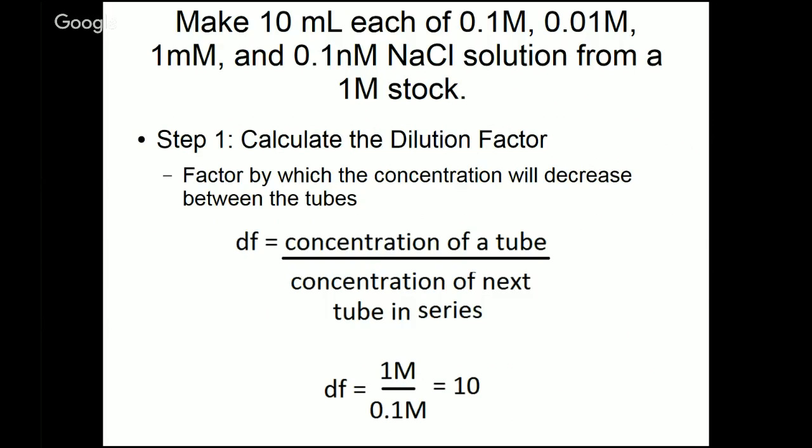Well, first of all, let's look at the formula that you're going to use for this dilution. The first number you need to calculate is what we call the dilution factor. The dilution factor, as it says here, is the factor by which the concentration will decrease between the tubes. So they're going to decrease by a constant factor. Calculating the dilution factor is actually really easy. What you do is you take the concentration of one particular tube, and you're going to divide it by the concentration of the next most concentrated tube in the series. So in this case, we've got our 1 molar stock. We're going to divide that by the next tube in the series, which is the 0.1 molar. So 1 divided by 0.1, that tells us that our dilution factor for the series is 10. That each tube is going to decrease 10 times in terms of concentration.